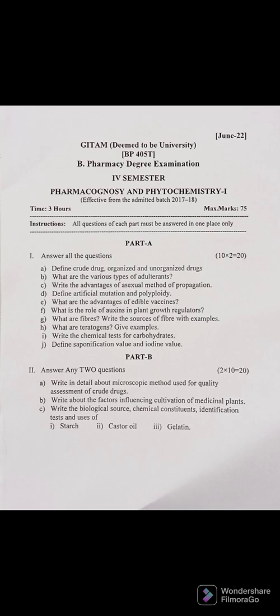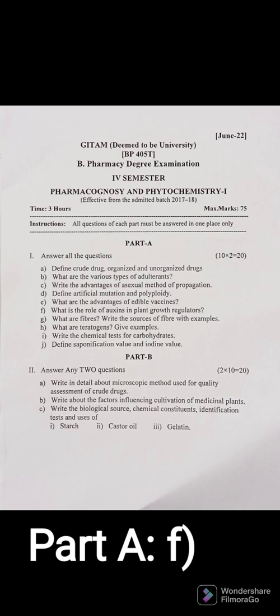Question 1F: What is the role of auxin in plant growth regulators? Do not try to write about all plant growth regulators — only the role of auxin has been asked. Auxin is useful in shoot growth; its role includes cell growth, elongation of plant parts, and cell multiplication.